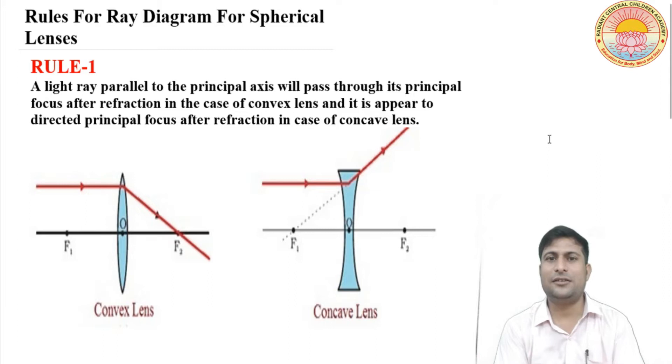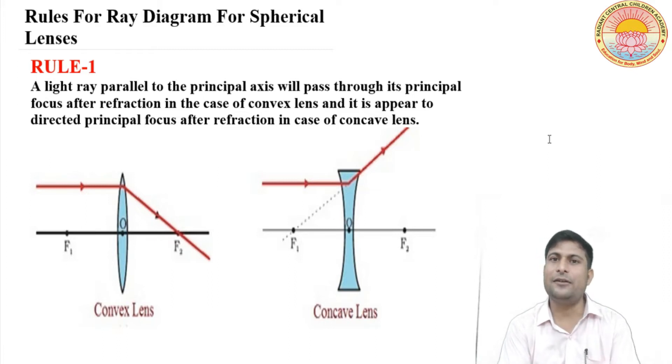You can see three rules for ray diagrams which we use for convex lens and spherical lenses image formation and ray diagrams. Let's start. The very first rule is: a light ray parallel to the principal axis will pass through its principal focus.